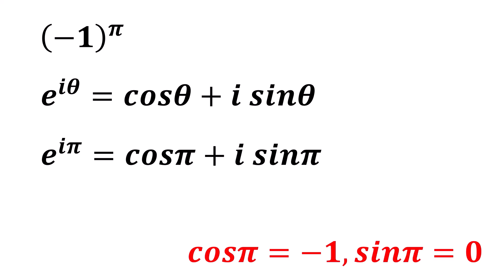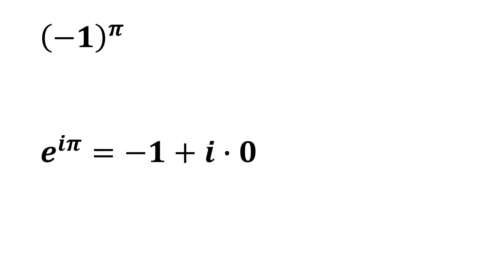We can rewrite the equation as e to the power of i pi is equal to negative 1 plus i times 0. Simplifying this, we get e to the power of i pi is equal to negative 1.